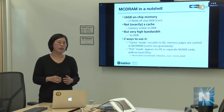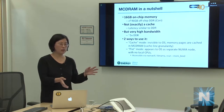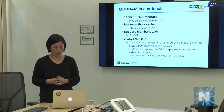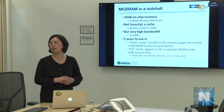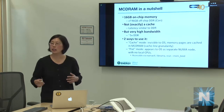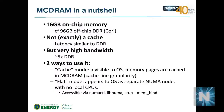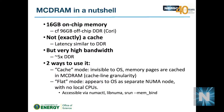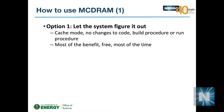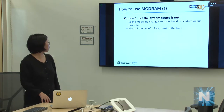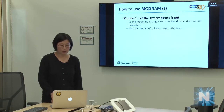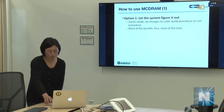MCDRAM has two primary usage modes: cache mode and flat mode. Cache mode requires no code changes — the OS manages the high-bandwidth memory transparently, and it's the default for most users. It's free to use with no modifications to your build or run procedures.